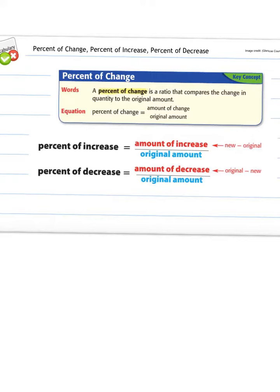So percent of change, a percent of change is a ratio that compares the change in quantity to the original amount. And we show this by taking the amount of change and putting it over the original amount, and that'll give us the percent of change.